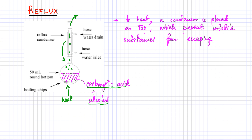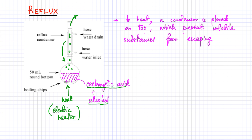The condenser placed on top prevents any alcohol from escaping, so all the alcohol must react with the carboxylic acid. Additionally, when dealing with organic compounds, heating is never done directly with flames because organic compounds will combust and burn. You generally use an electric heater or another flameless device to prevent accidents. So reflux means heating with a condenser on top to prevent volatile substances from escaping.